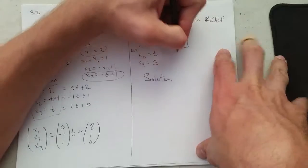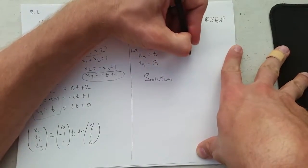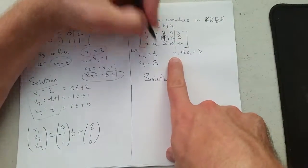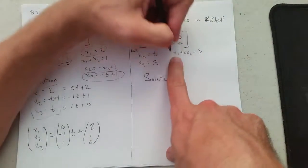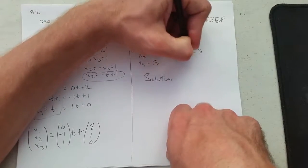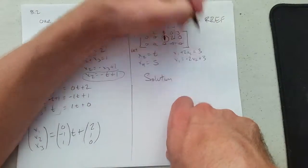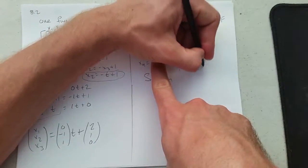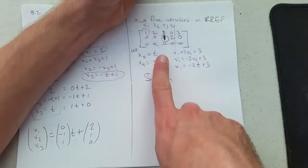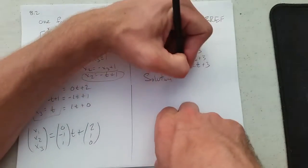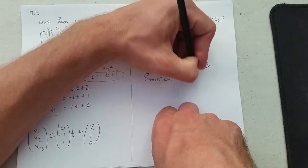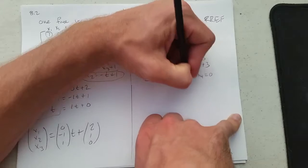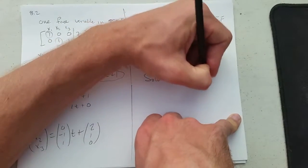x1 plus 2x2 equals 3. I know x2 and x4. So I'm going to solve for x1 equals negative 2x2 plus 3. x1 equals negative 2t plus 3. And last, x3 plus 2x4 equals 0. And we're solving for x3. x3 equals negative 2x4. x3 equals negative 2s.